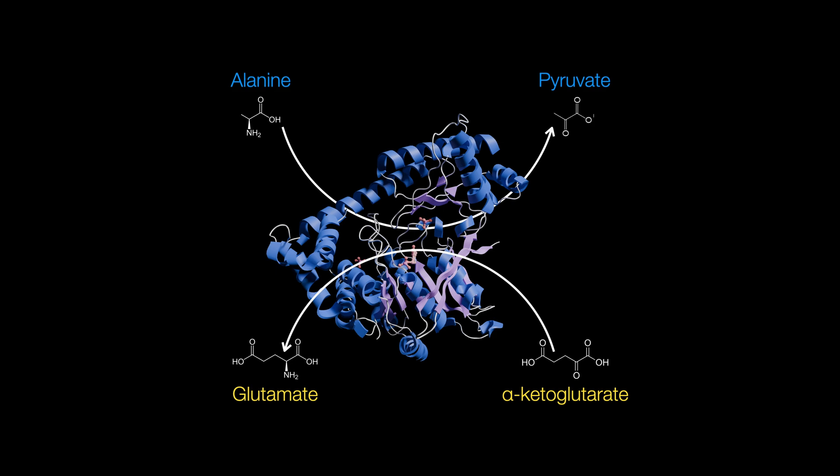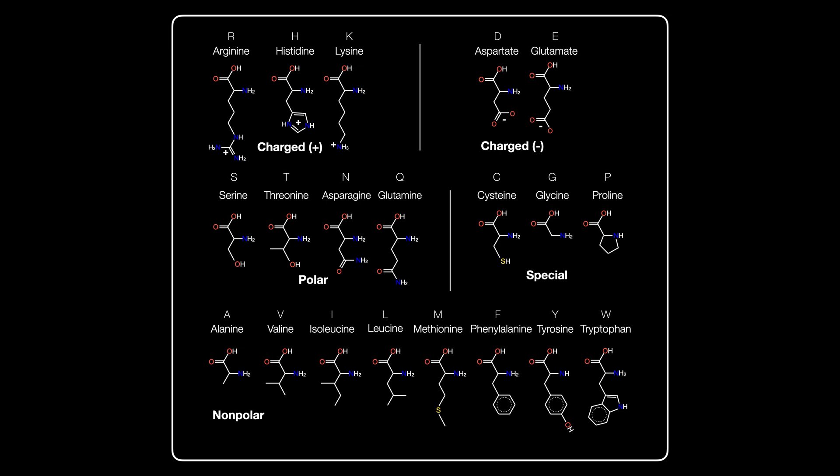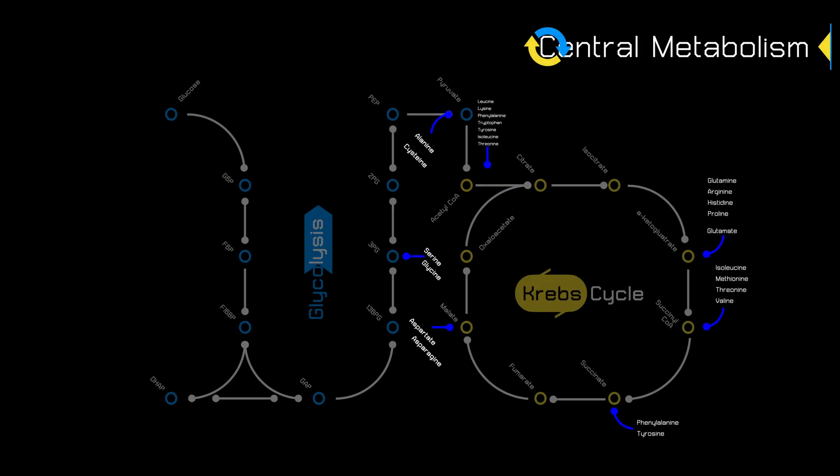That's right. The Krebs cycle and glycolysis aren't just meant for sugar metabolism. These pathways are not excessively built. The little extra steps are just entry points for various other compounds.